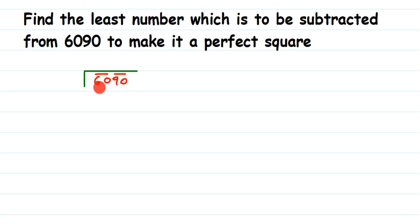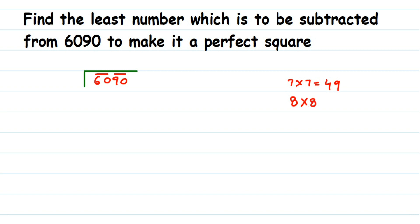Now I have to work with the first pair, which is 60. You have to choose a divisor such that its square is near to 60 — specifically, the largest perfect square less than or equal to 60. There's no perfect square equal to 60. Checking: 7×7=49 and 8×8=64. Since 64 is greater than 60, I take 7. So the divisor here is 7.